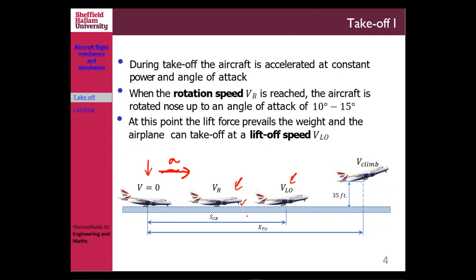When the complete set of landing gears, both nose and main, are no longer touching the ground, this is called liftoff. You then have to pass the screen height — by regulation, 35 feet — which is defined due to terrain obstacles surrounding the runway and airport. After that you must make a positive climb; you are not allowed to decrease your flight path angle.